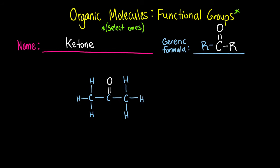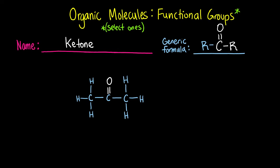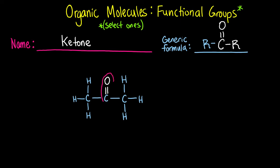A ketone is a functional group that is characterized by a carbon double bonded to an oxygen that is in the middle of a chain of carbons. For example, this carbon is double bonded to oxygen, but the carbon itself is singly bonded to other carbons.